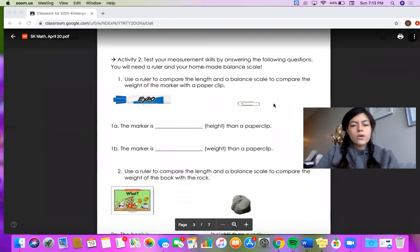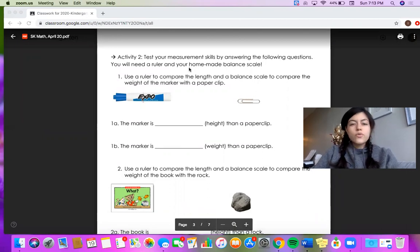Now it goes right to activity two. Test your measurement skills by answering the following questions. Now for this activity if you feel confident that you can guess or make a smart estimate as to which objects will be heavier, lighter, longer, or shorter, then you can use your brainpower to estimate your answers.